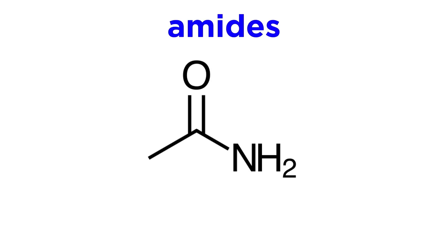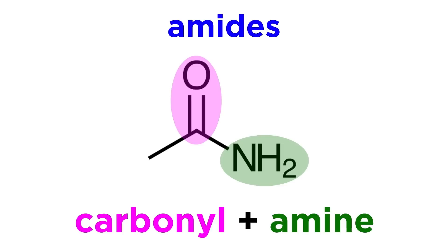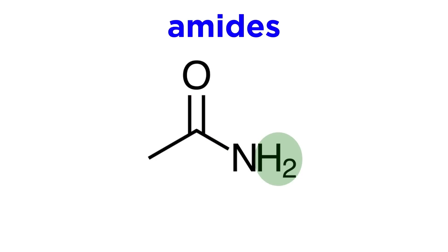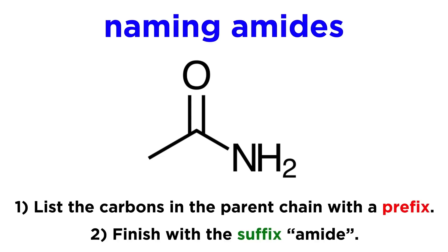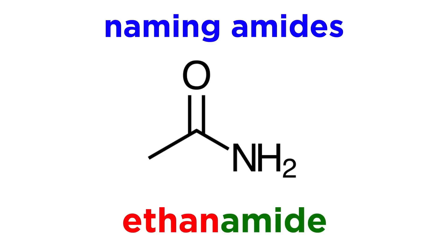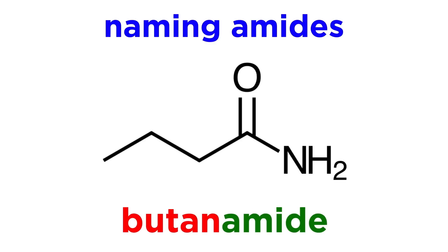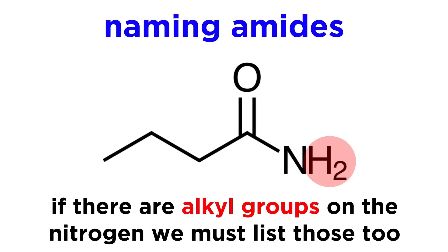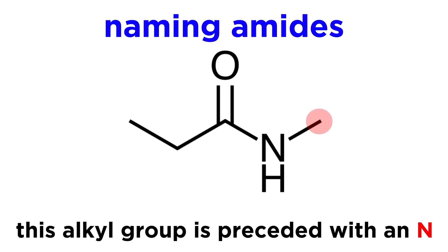The last carbonyl-containing functional group we will mention is the amide. This is sort of like a combination between a carbonyl and an amine. First, let's examine the simpler situation where this nitrogen is bound to two hydrogen atoms. In this case, we will simply use the suffix -amide, after indicating the number of carbons in the main chain. So we would get ethanamide, propanamide, butanamide, and so forth. Now if we replace these hydrogen atoms with alkyl groups, we will have to list those as well.